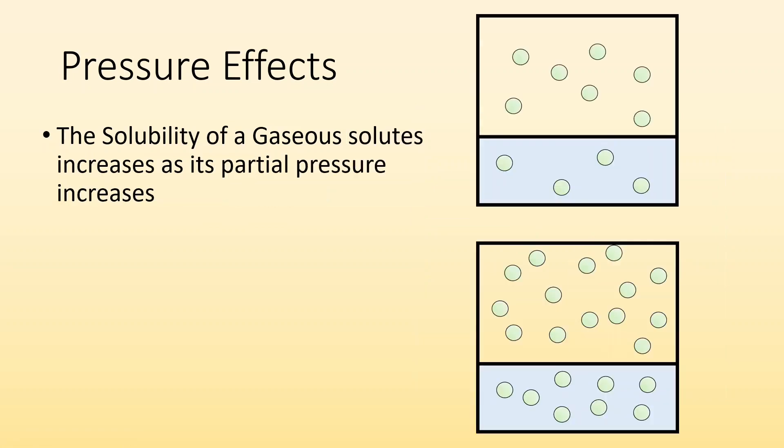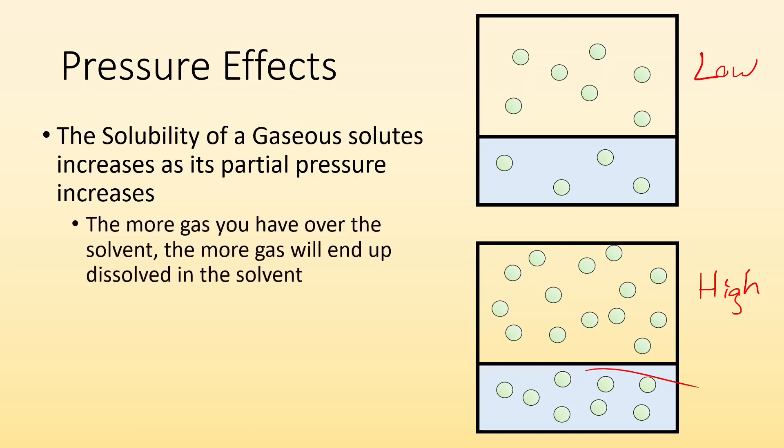If you take a look, the top is low pressure, the bottom one is showing high partial pressure, and you can see the solubility changes as well. If you have more gas, a higher pressure gas interacting with the solvent more, you expect more of it to dissolve. So the more gas you have over the solvent, the more gas is going to end up dissolved in the solvent.